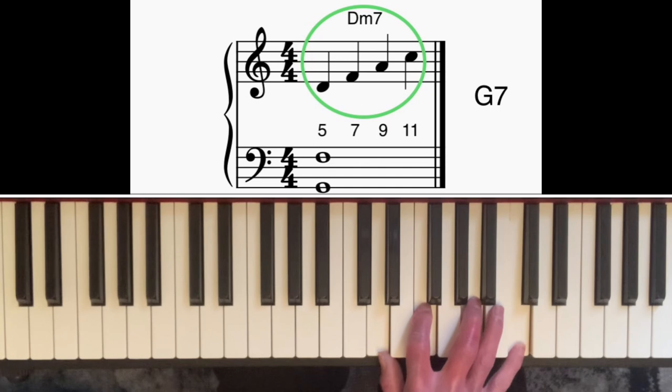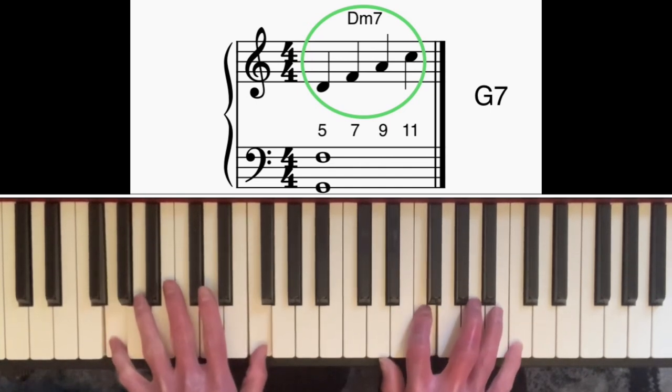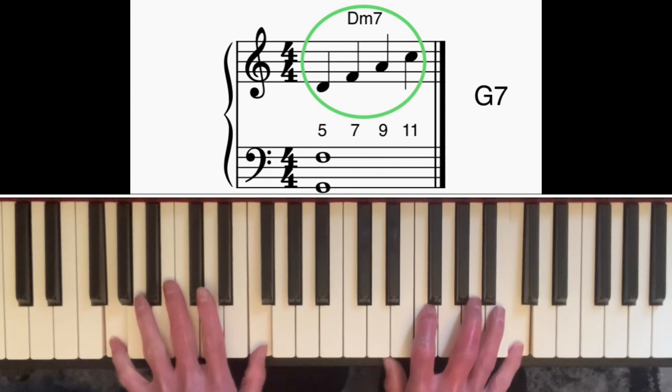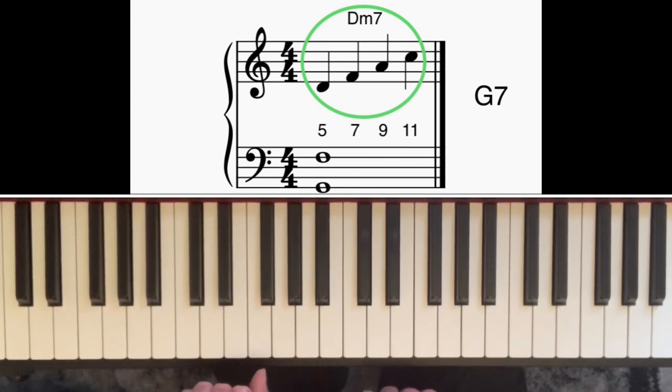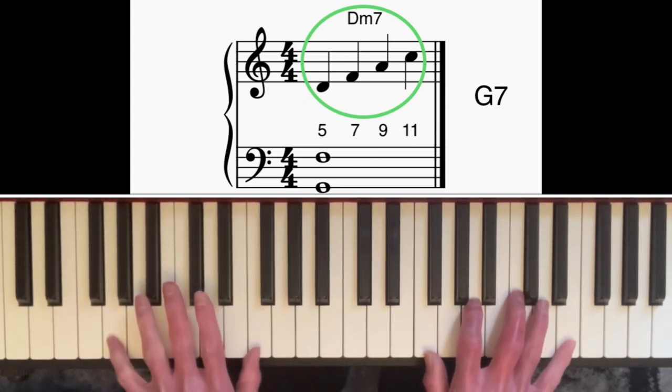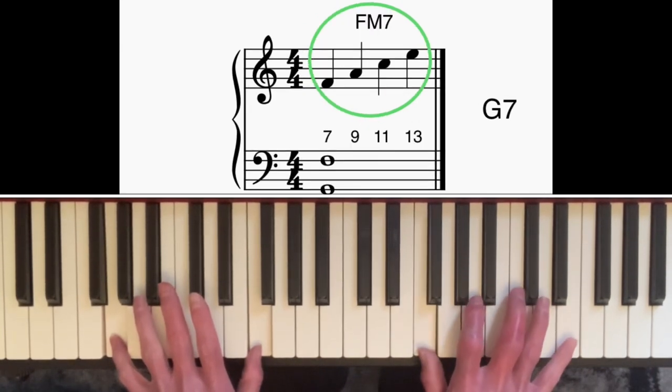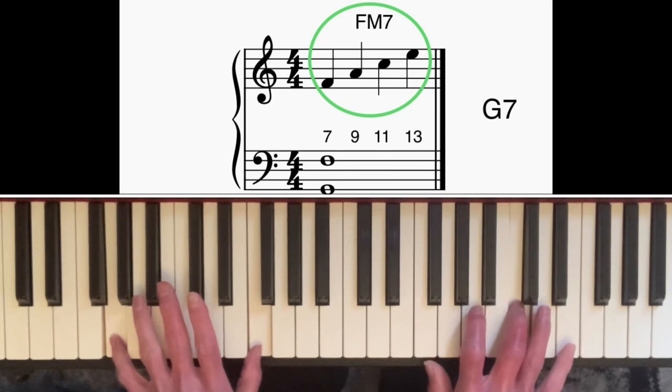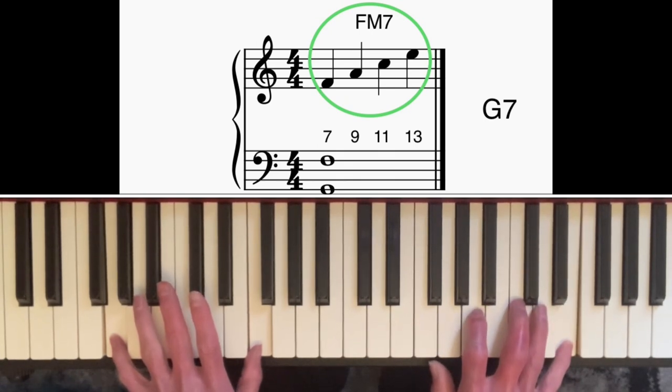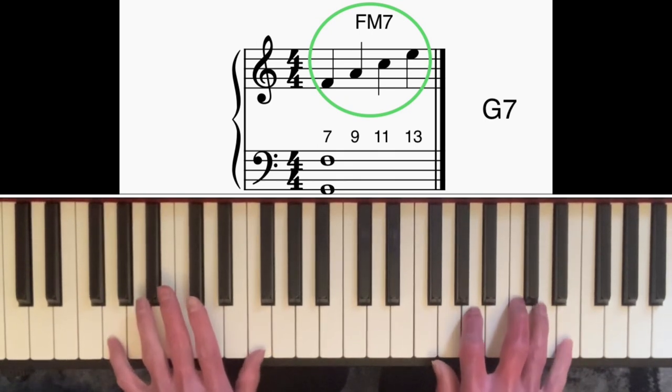So that's the second arpeggio. The third one is starting on the seventh of G7, the F. So that's the seventh, the ninth, the eleventh, and the thirteenth. That's a really colorful one because we've got three upper extensions: the ninth, the eleventh, and the thirteenth.